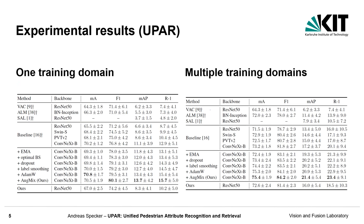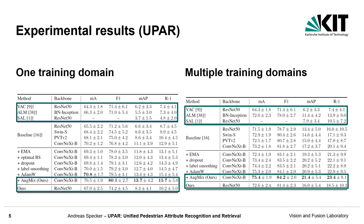Let's move on to the results concerning generalization on the UPAR dataset. Mean accuracy and F1 scores belong to the PAR task, and mean average precision and rank 1 are the evaluation metrics for the retrieval.